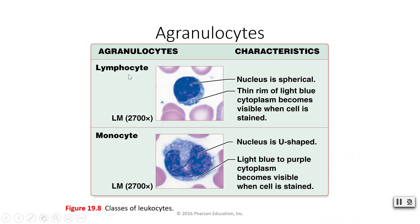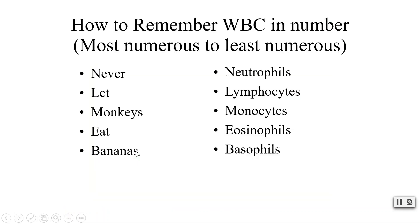To review agranulocytes: lymphocytes have that giant darkly-stained nucleus that takes up most of the cell; monocytes have that U-shaped or kidney-shaped nucleus — no visible granules in either. To remember the order of leukocytes from most to least numerous, use the mnemonic 'Never Let Monkeys Eat Bananas': neutrophils are the most numerous and basophils are the least numerous.